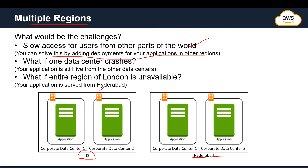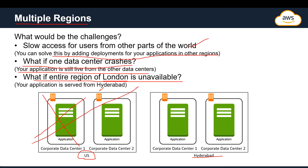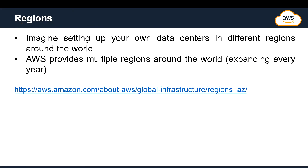With multiple regions, if one of the data centers in the US region goes down, users can still access the other three data centers — so the application remains live. And if the entire US region becomes unavailable, your application is still accessible because it is also deployed in the Hyderabad location. This is how you tackle availability by using multiple regions.